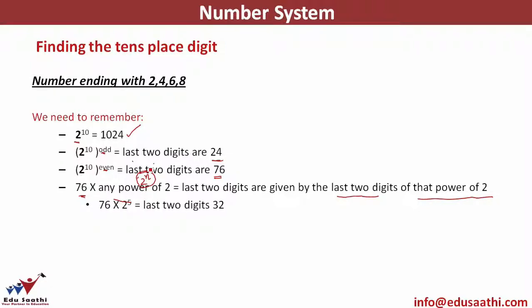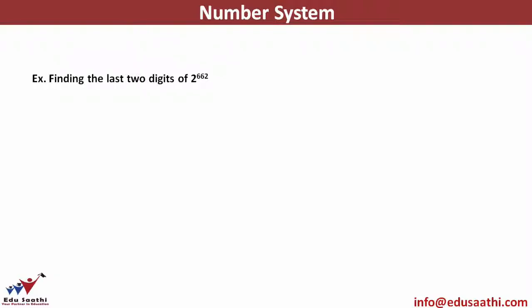So if it is 76 into 2 raised to power 5, the last two digits would be 32. If it is 76 into 2 raised to power 6, the last two digits will be 64. Similarly, 76 into 2 raised to power 10 gives last two digits as 24. Now let's look at an example: find the last two digits of 2 raised to power 662. I will split it up into 2 raised to power 10 inside, since I know the last two digits of that.